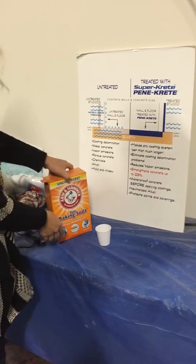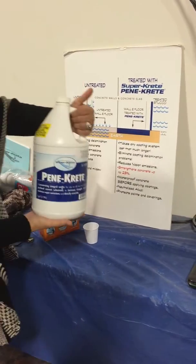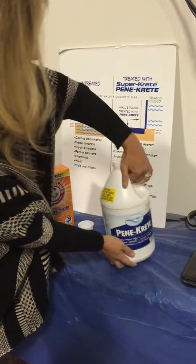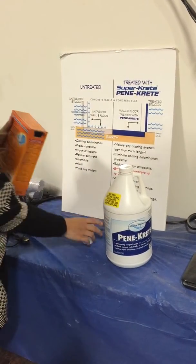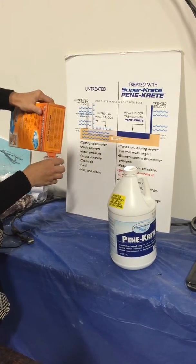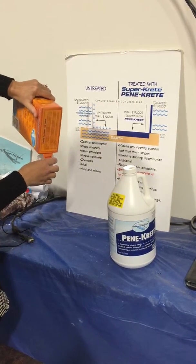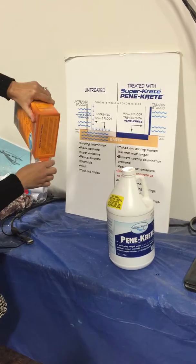This is a demonstration of how the SuperCrete Pentacrete product works. So we are going to take some baking soda and pour it in this cup. This is representative of the alkali and free lime found in common Portland cement.